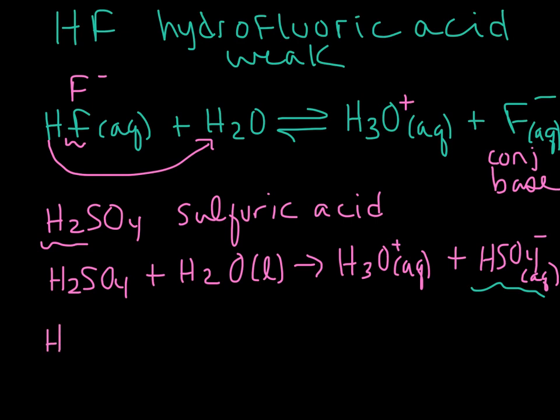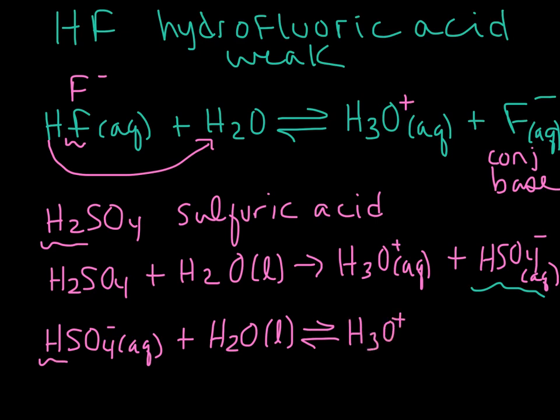Let's take this conjugate base from the previous step, this anion. I'm going to put it in water again. And this time it's weak. And we're going to lose H plus again, just as before and make hydronium. And then finally we're left over with the sulfate anion. So there's some examples of both strong and weak acids and a diprotic or polyprotic acid.